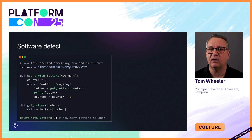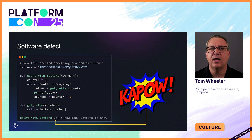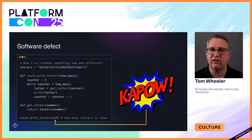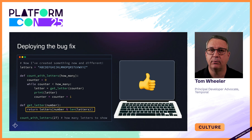And speaking of software defects, the example I've been using has one — I wonder if you spotted it earlier. The application will crash if the number passed to the function exceeds the size of the alphabet, because it selects a letter based on its position in the string at the top. The fix I've highlighted here prevents it from going out of bounds.